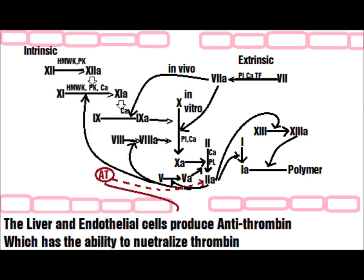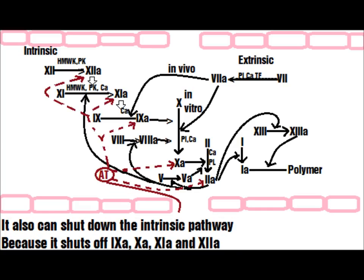The regulators: The liver and endothelial cells produce antithrombin, which has the ability to neutralize thrombin. It can also shut down the intrinsic pathway — it shuts down Factors 9, 10, 11, and also 12A.